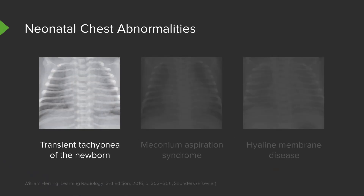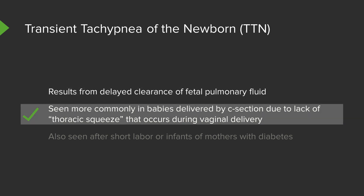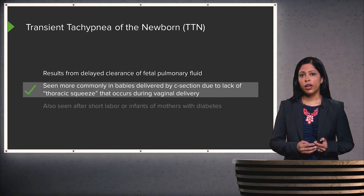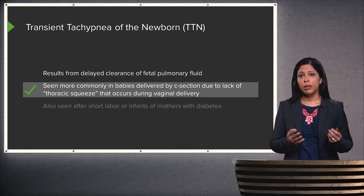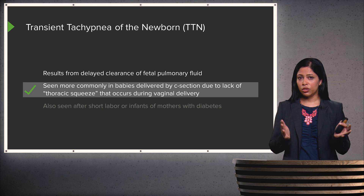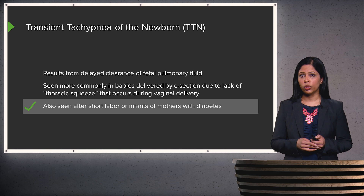Transient tachypnea of the newborn is caused by delayed clearance of fetal pulmonary fluid. This is more commonly seen in babies delivered by C-section because of lack of the thoracic squeeze that normally occurs during vaginal delivery. During vaginal delivery, the thorax is squeezed, squeezing out extra pulmonary fluid. Babies delivered by C-section don't have this thoracic squeeze, so they have a harder time clearing out the residual pulmonary fluid from their lungs. This can also be seen after short labor or in infants of mothers with diabetes.